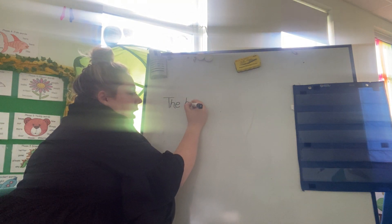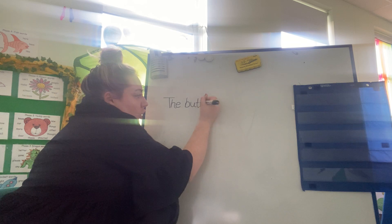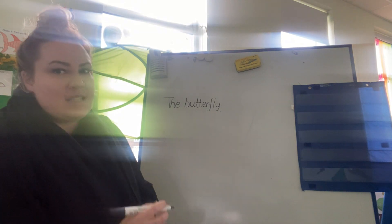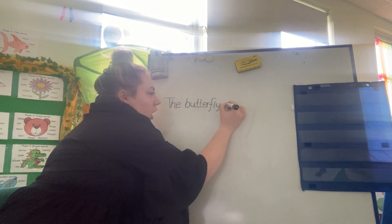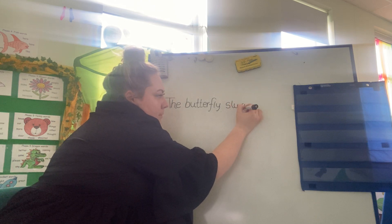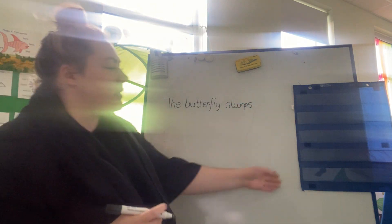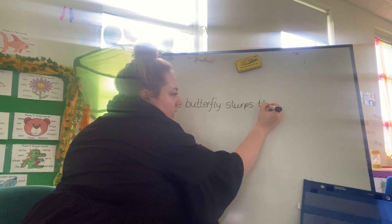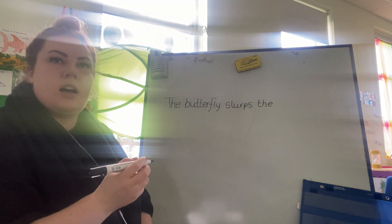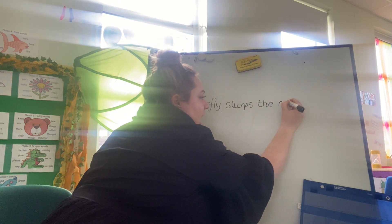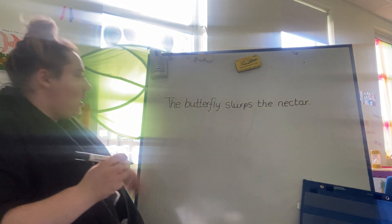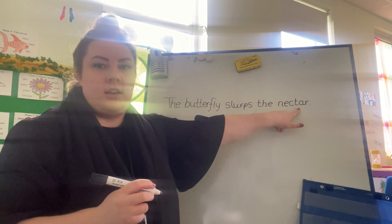The butterfly. B-b-b, butterfly. Now slurps is a bit of a tricky word: S-l-r-ps, slurps. Then 'the', our tricky word again, the. Then we're going to spell nectar: n-e-c-t-r, and full stop. The butterfly slurps the nectar. Well done!